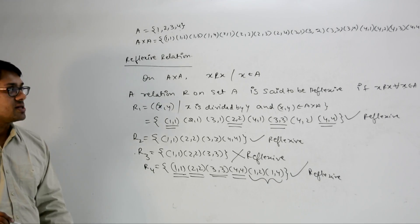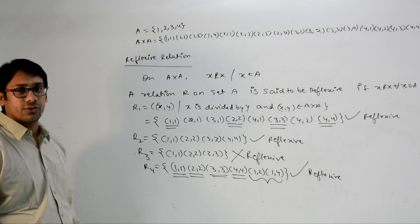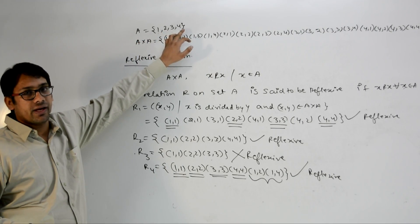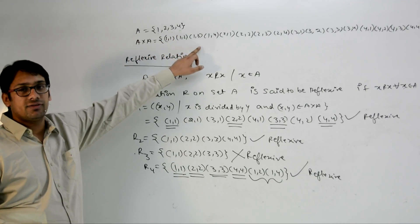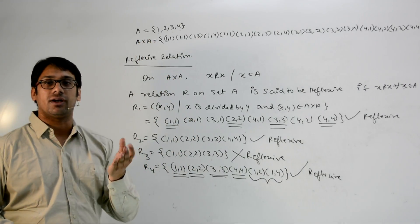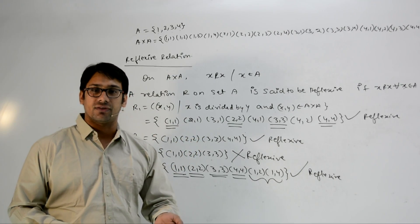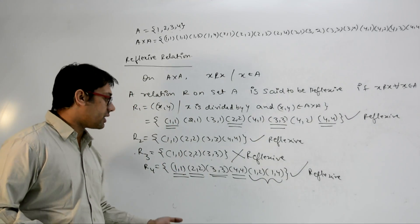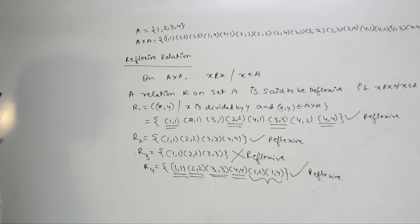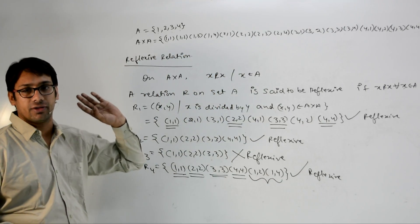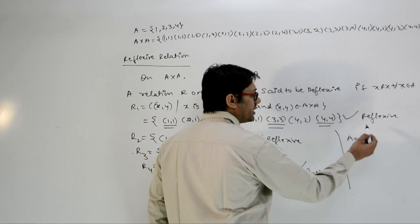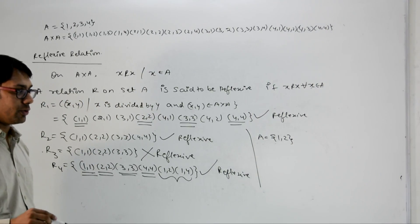This brings a very important question: assume we have a set A containing exactly 4 elements. Then A×A contains 16 elements. The question is: how many relations over set A can be reflexive? We need to answer this question.